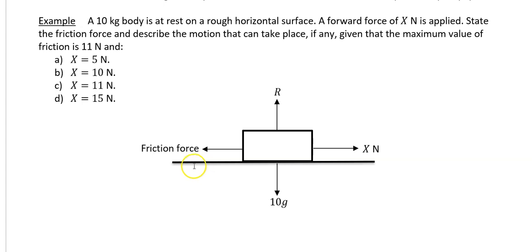We're going to look at this example. A 10 kilogram body is at rest on a rough horizontal surface. A forward force of X newtons is applied. State the friction force and describe the motion that can take place, if any, given that the maximum value of friction is 11 newtons.